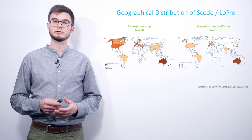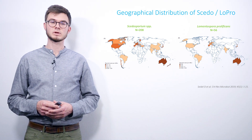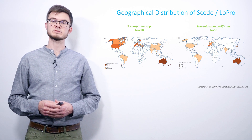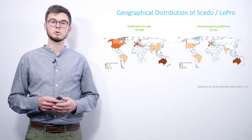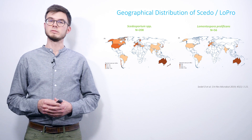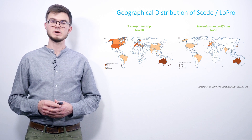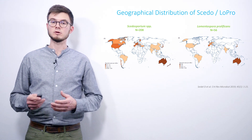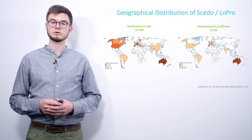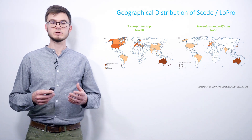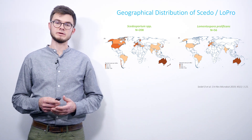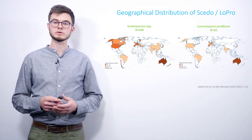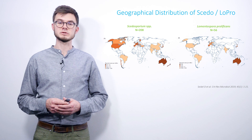We included reports from 33 different countries. Here we can observe different geographically distribution patterns of scedosporiosis, which is predominant in Middle European and Northern American countries and Australia, here displayed on the left side, while lomentosporiosis was mostly reported in Australia. One might expect a reporting bias here. The white-colored countries have no reports, which does not mean that these species do not occur there.